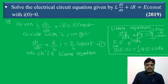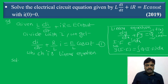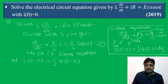Now I compare and find the solution of this equation. The solution here has I on the left side multiplied by the integrating factor, equal to the integral of Q times the integrating factor dt, plus constant C.